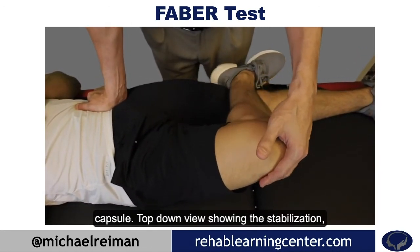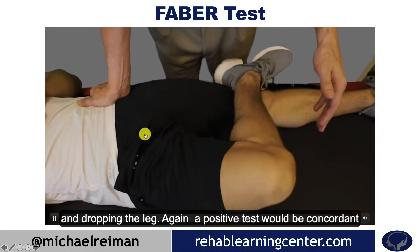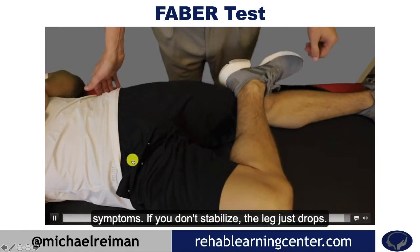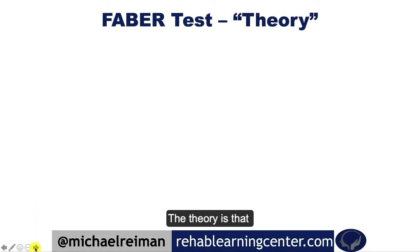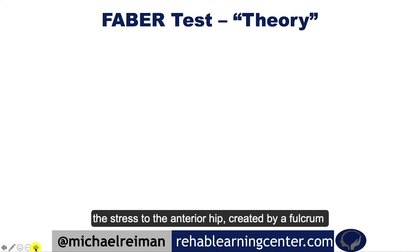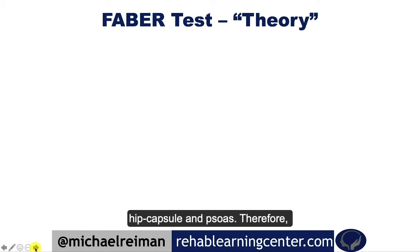Top-down view showing again the stabilization, dropping the leg — a positive test would be concordant symptoms. If you don't stabilize, the leg just drops. The theory is that the stress to the anterior hip, created by a fulcrum from the abduction and external rotation, stresses the anterior hip, capsule, and psoas, therefore recreating the concordant symptoms.